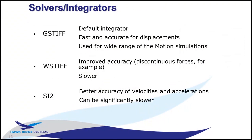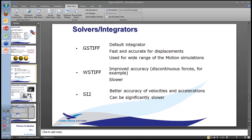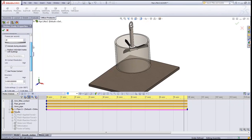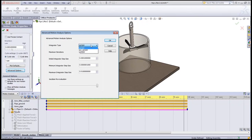As far as solver options: the default solver is called G-Stiff, and most of the time you won't need to change it — it's pretty fast and accurate, used for pretty much any type of motion simulation. However, there are other options for special cases. If you need improved accuracy, particularly with rapidly changing conditions, the W-Stiff solver can be used, though at a performance penalty. There's also the SI2 solver, which has better accuracy for velocities and accelerations if those are the key results you're looking for, but it can be slower. In the SOLIDWORKS Motion options in the Motion Manager, under motion analysis settings, you can choose the frame rate, and under advanced options you have the different solver options.